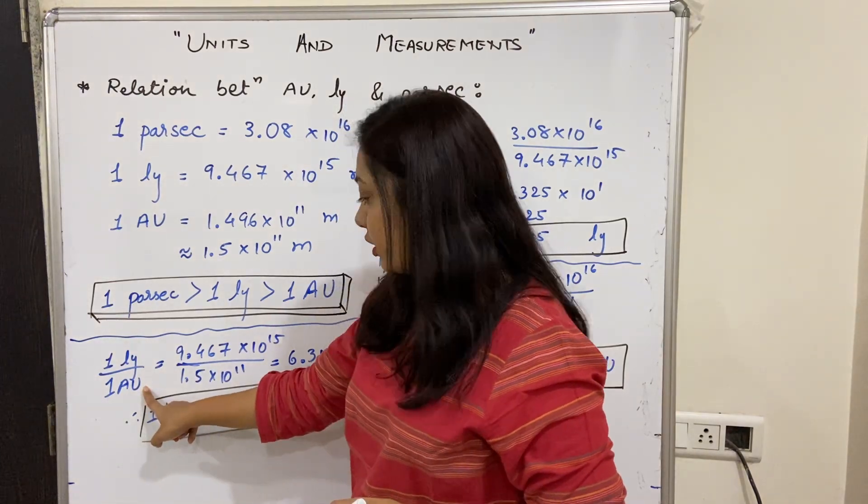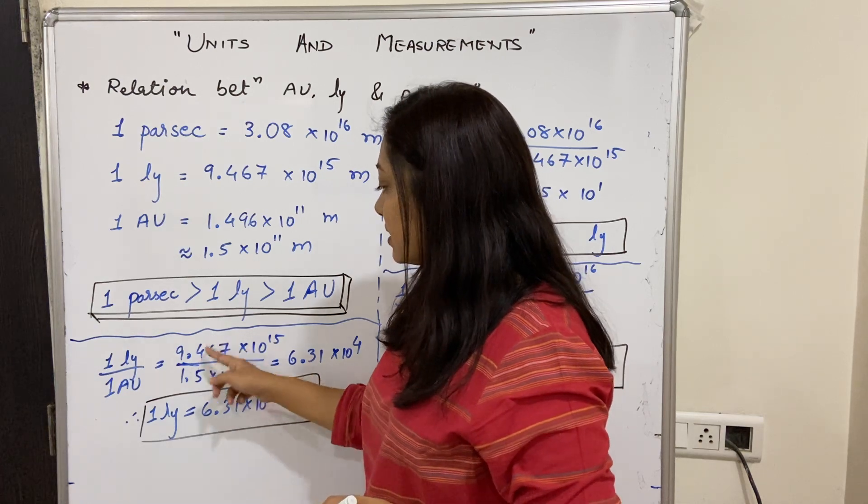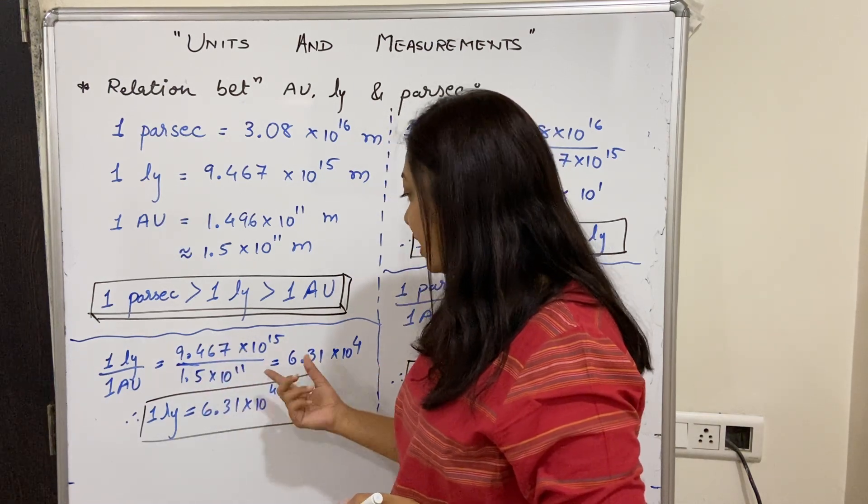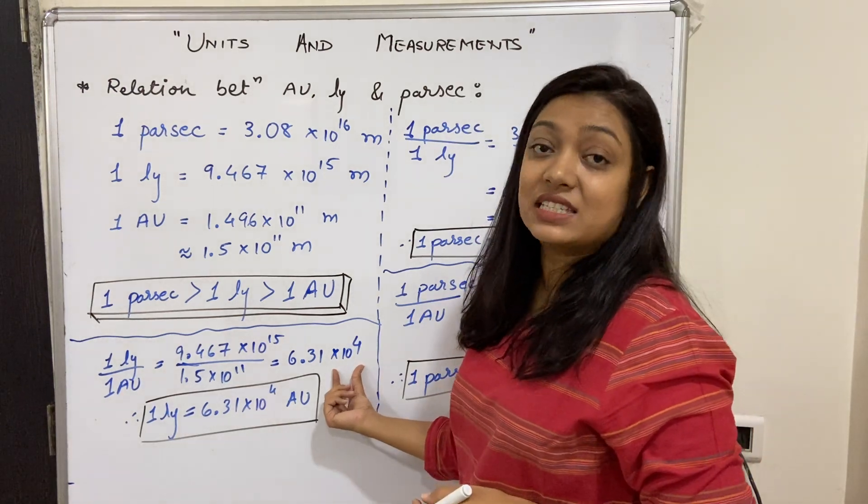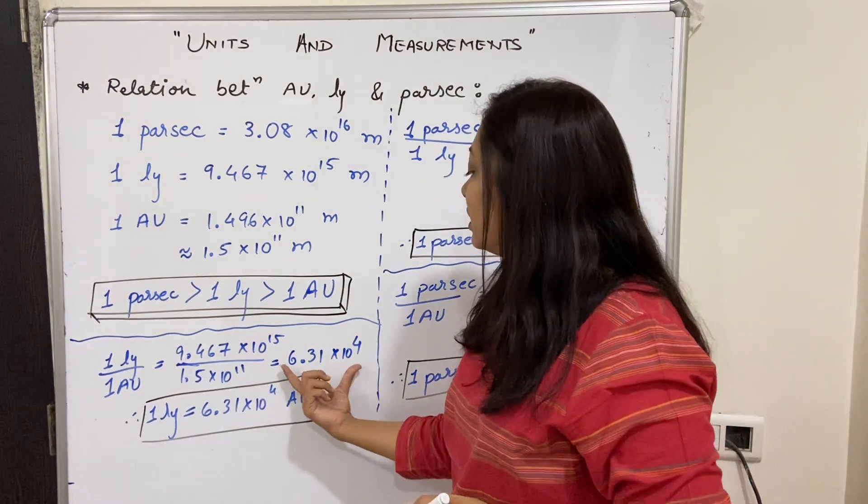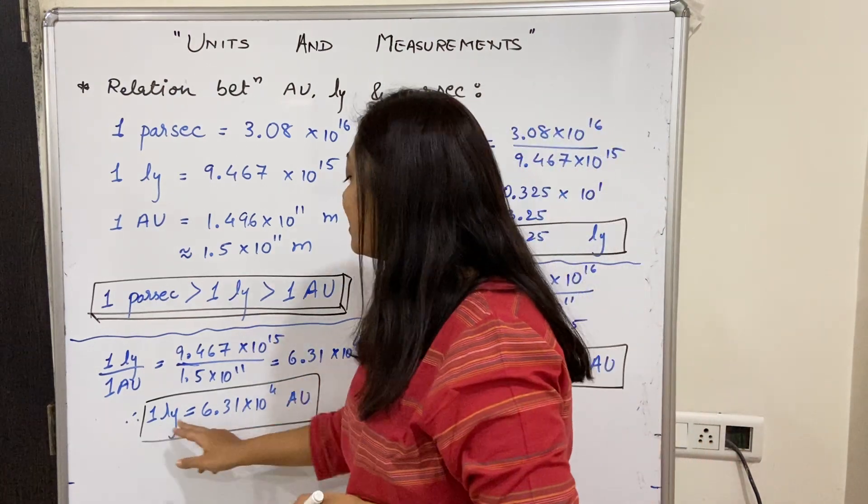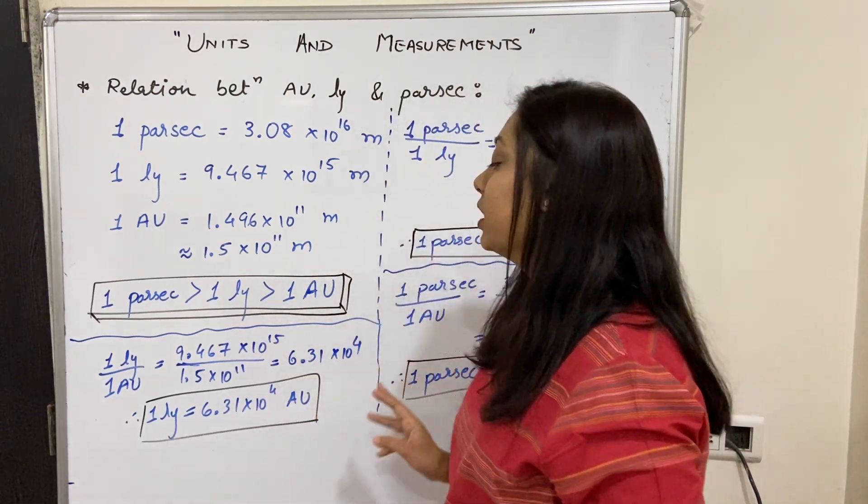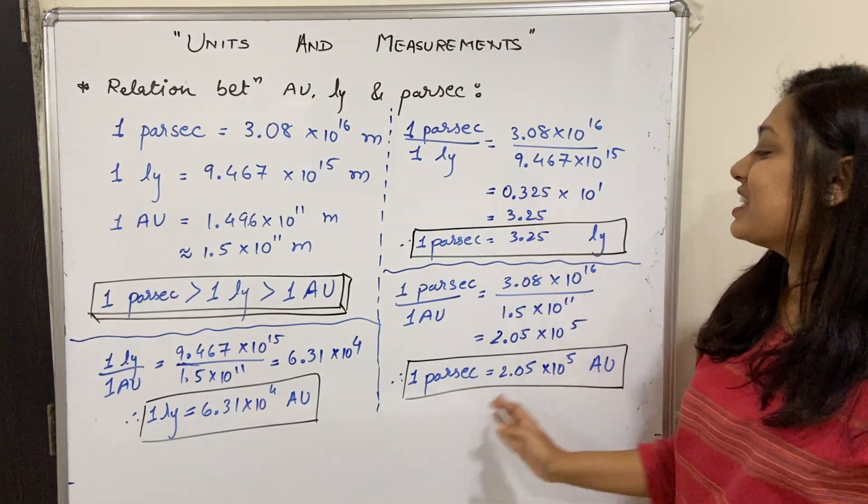Now for one light year with respect to one astronomical unit: 9.467 × 10^15 upon 1.5 × 10^11 gives us 6.31, and 15 upon 11 remaining is 10 to the power 4. So one light year is 6.31 × 10^4 astronomical units. These are all the comparisons.